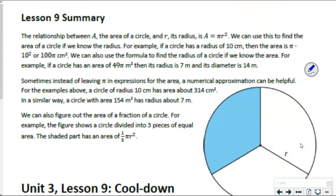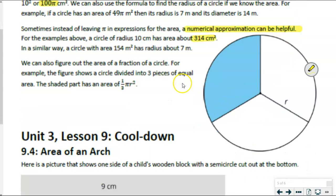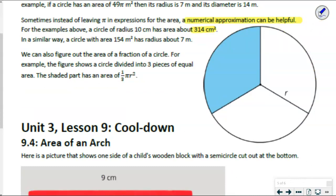Let's summarize. All of this, we have been practicing the area of a circle. We can find the area of a circle as long as we know the radius — the formula is area equals pi times the radius squared. For example, if the radius is 10 centimeters, then ten squared is 100, and we multiply by pi for 100 pi. We can also type that into our calculator and get an approximation of 314 centimeters squared. We also observed today that we can find the area of pieces of a circle — when a circle is cut into equal pieces, we take the full area and divide by the number of pieces.